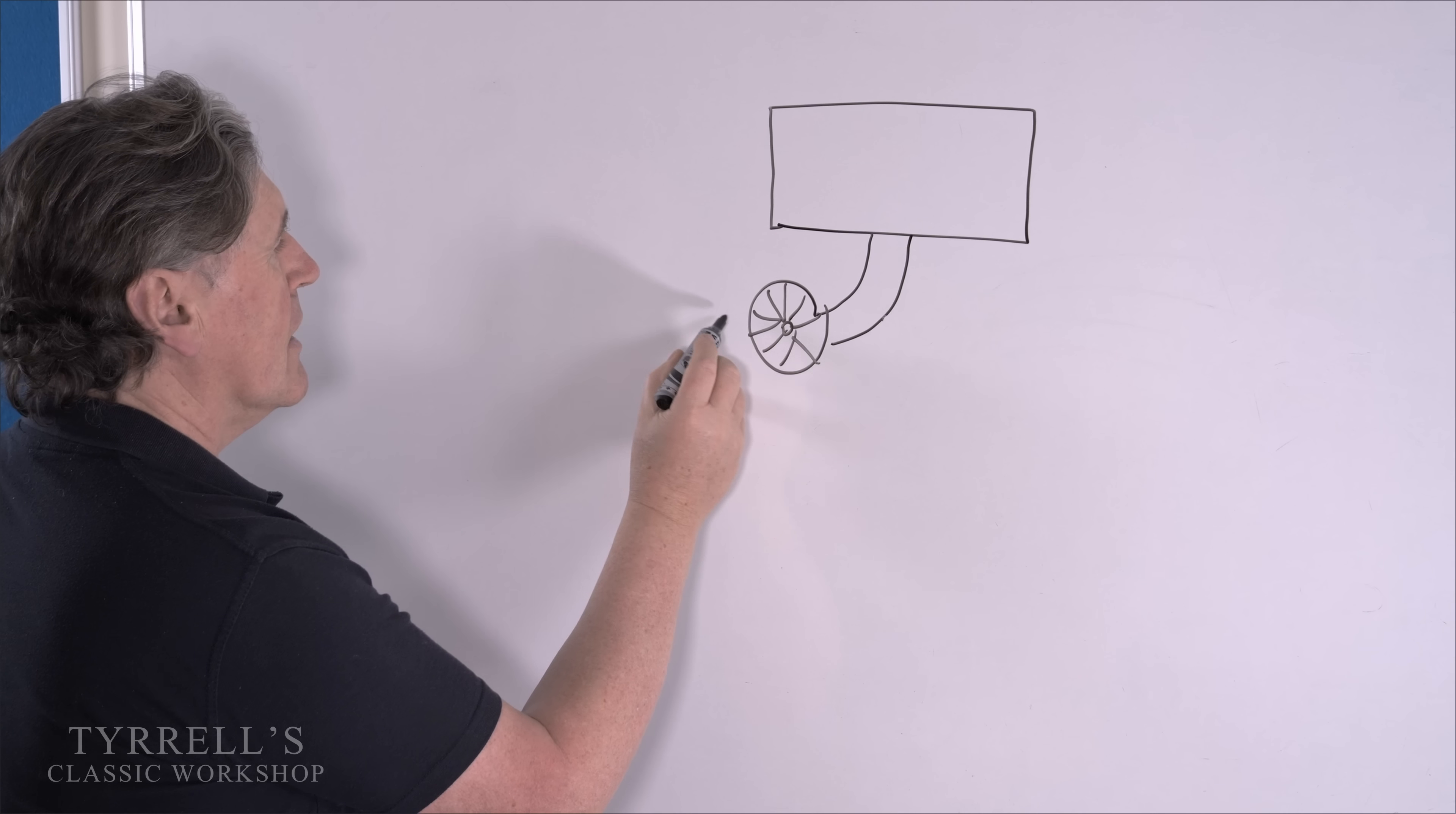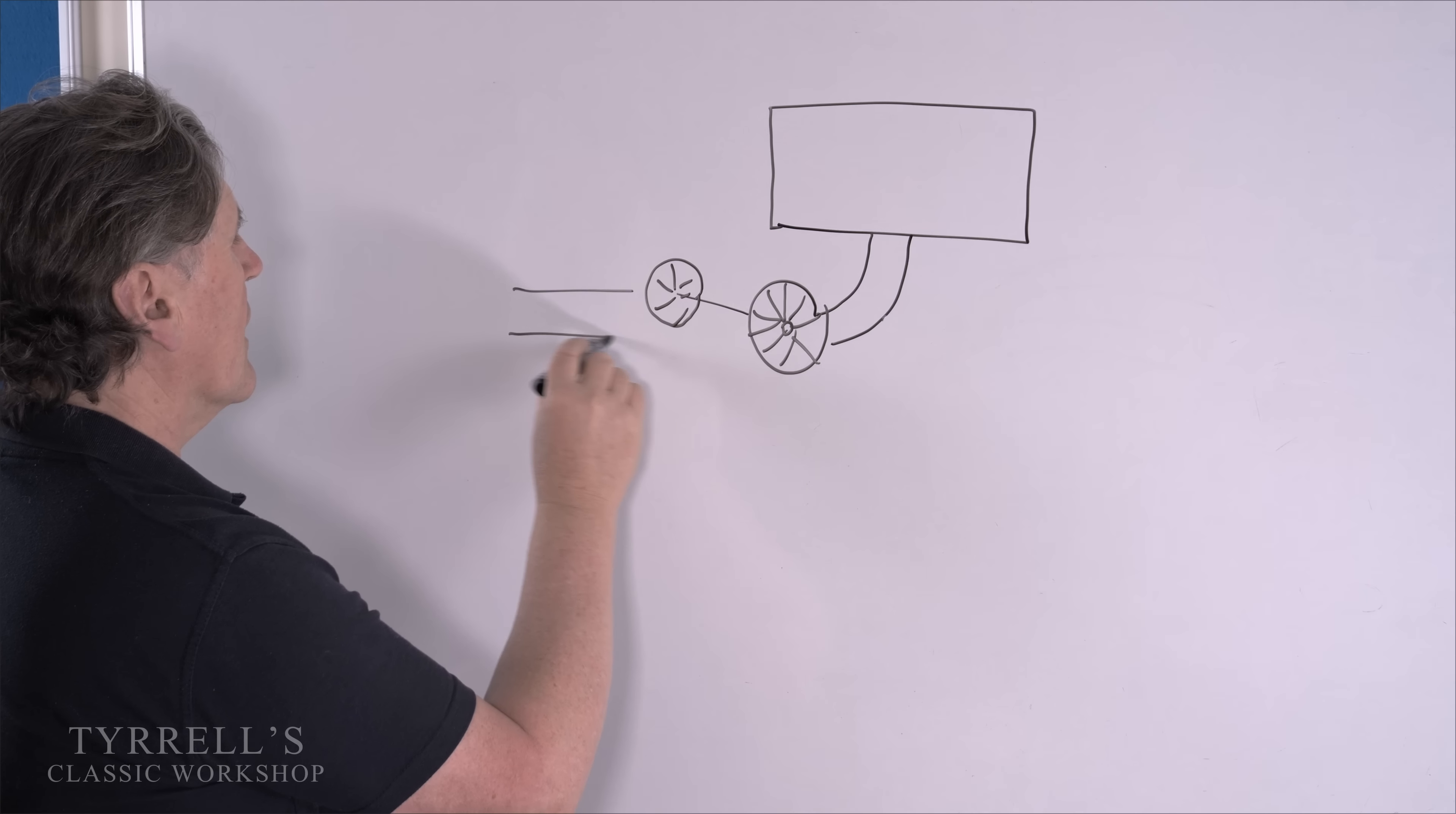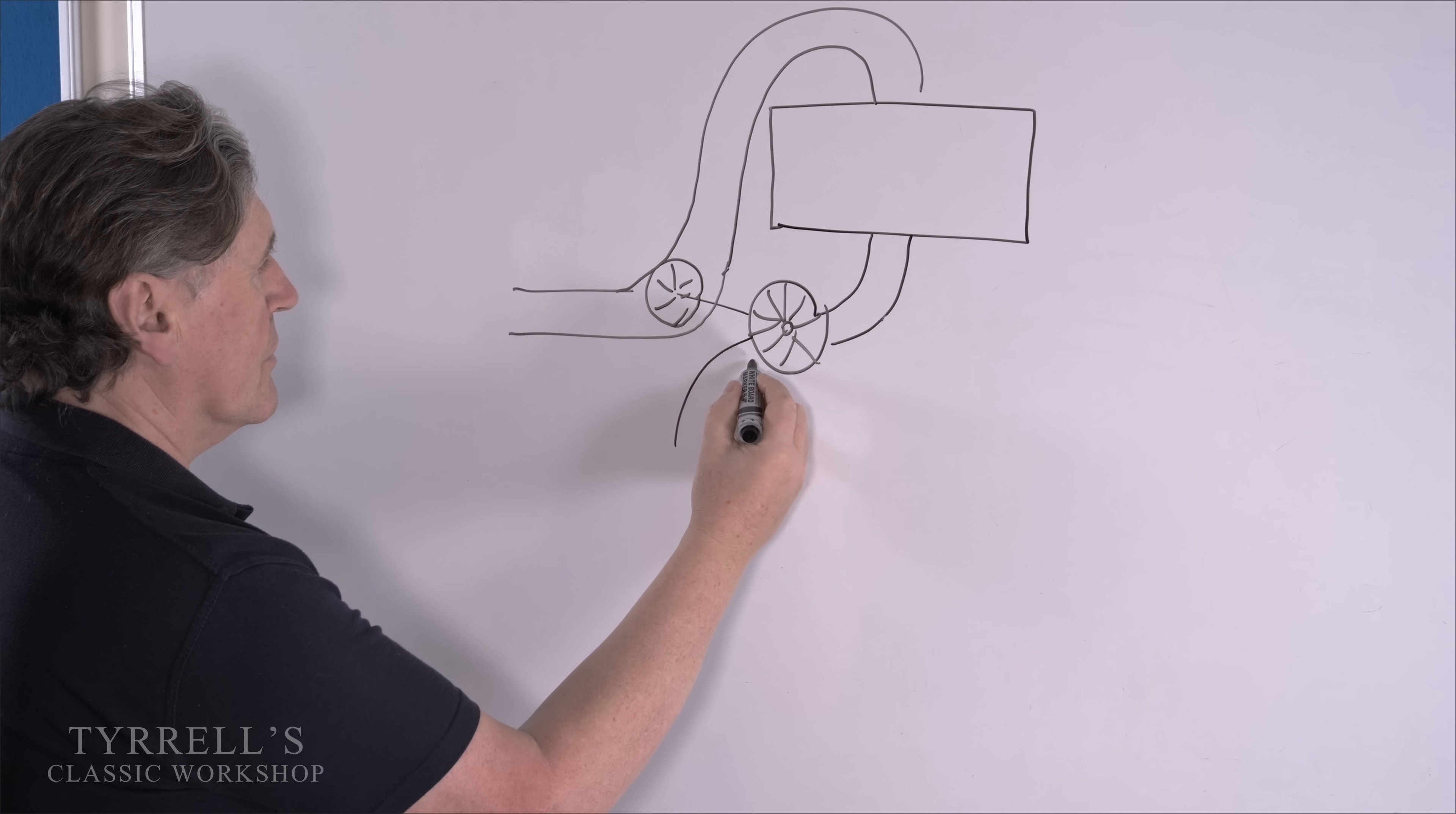And the exhaust gases as they escape from the engine turn the turbine, which has a shaft coming out of it with another turbine here, and that is in the inlet. So it draws the inlet air here, goes through the turbine which compresses it, and into the engine there.